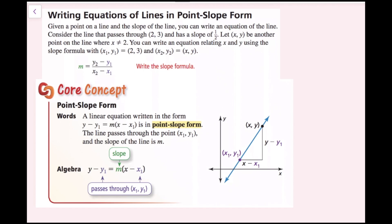Writing equations of lines in point-slope form. Given a point on a line and the slope of a line, you can write an equation of the line. Consider the line passes through (2, 3) and has a slope of 1/2. Let (x, y) be another point on the line where x is not equal to 2.